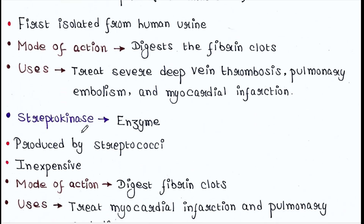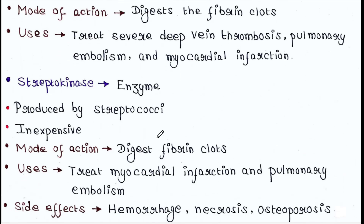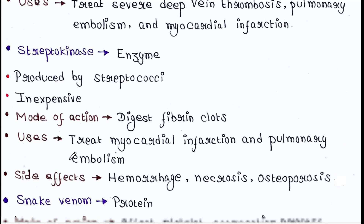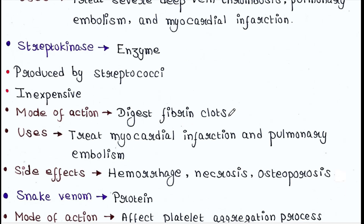Next is streptokinase. It is an enzyme produced by streptococci and is inexpensive. Mode of action: it digests fibrin clots. Uses: it treats myocardial infarction and pulmonary embolism. Side effects: hemorrhage, necrosis, and osteoporosis.